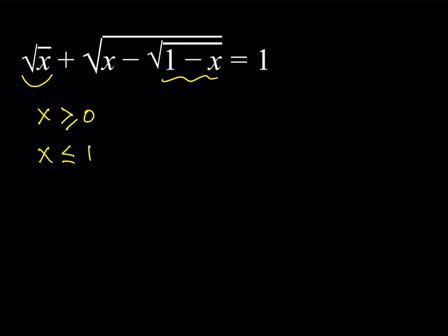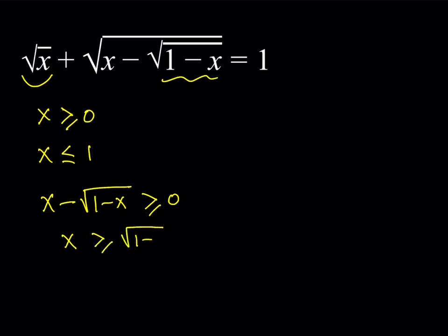How about the third one? If you check the third radical, it's going to give you something like this: we need that x minus the square root of 1 minus x is greater than or equal to 0. This can be written in different ways, but let's write it like this: x is greater than or equal to 1 minus x.